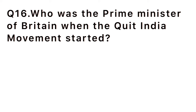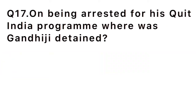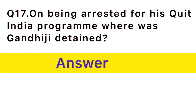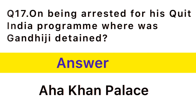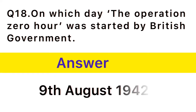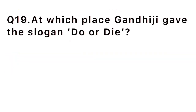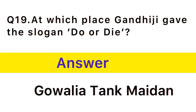Question number 16: Who was the Prime Minister of Britain when the Quit India Movement started? Answer: Winston Churchill. Question number 17: On being arrested for his Quit India Programme, where was Gandhiji detained? Answer: Agha Khan Palace. Question number 18: On which day was Operation Zero Hour started by the British Government? Answer: On 9th August 1942. Question number 19: At which place did Gandhiji give the slogan Do or Die? Answer: Gowalia Tank Maidan.